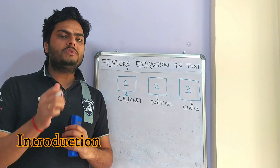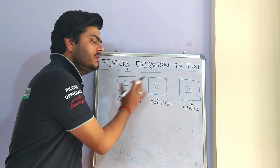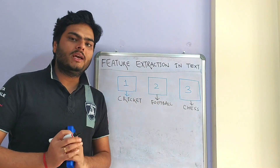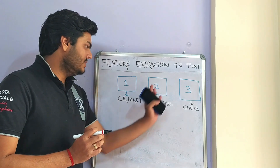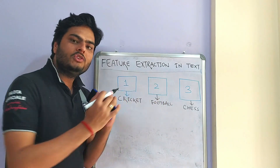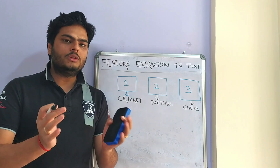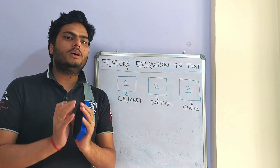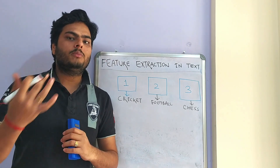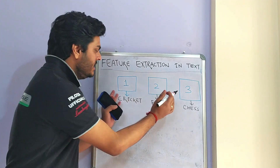Let's start this video with a problem statement in hand. Let's say you have three PDF files. These three PDF files talk about three different games — cricket, football, and chess. Your job is to take this as your training data and train a machine learning model so that tomorrow if I give you a new file, you should be able to tell me which particular game this file is talking about. So this is a classification problem and this is your training data.